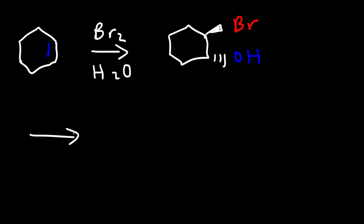And then in the second step, you want to add sodium hydroxide. And that will convert the halohydrin into an epoxide. So let's go over the mechanism of this process. So first, let's react Br2 with the cyclohexene molecule.